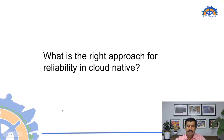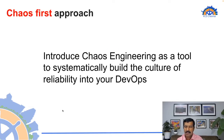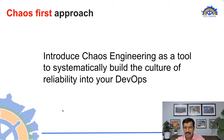The right approach to build reliability in cloud native is what we call the 'chaos first' approach in your DevOps. Chaos engineering is introduced as a tool to systematically build a culture of improving reliability across DevOps. Reliability is not one person's job — it's everybody's job in DevOps. You need a predefined approach while building, delivering, deploying, and managing software.